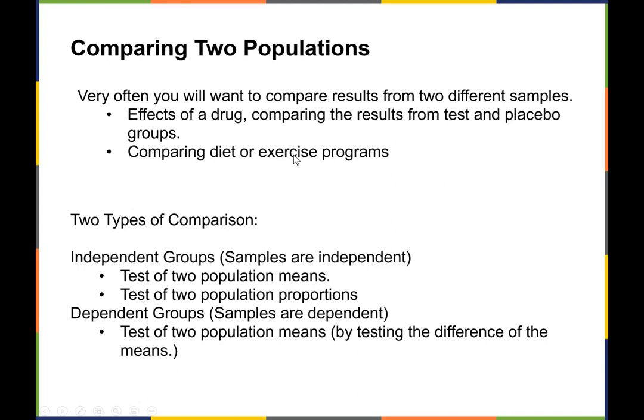Very often you're going to want to compare the results from two different samples. An example of this could be the effects of a drug, comparing the results from the test subjects to the placebo groups, or maybe comparing the results of a particular diet or exercise program. The focus today is independent groups — samples that are independent from each other — testing two population means. Later we'll do population proportions and some dependent group testing.